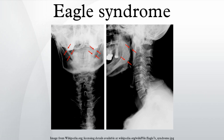Patients with this syndrome tend to be between 30 and 50 years of age, but it has been recorded in teenagers and in patients greater than 75 years old. It is more common in women, with a male-to-female ratio of 1:2.